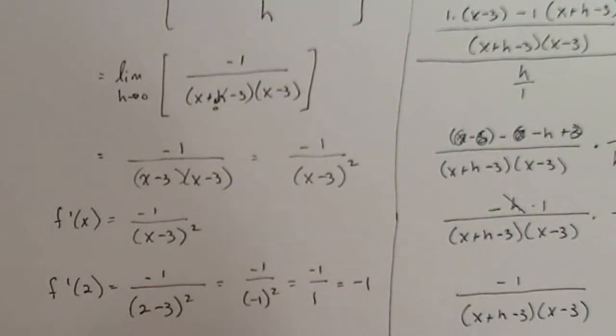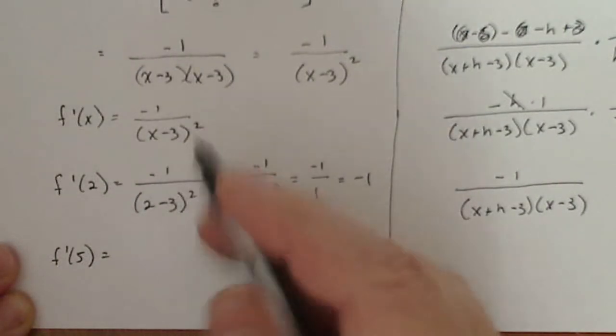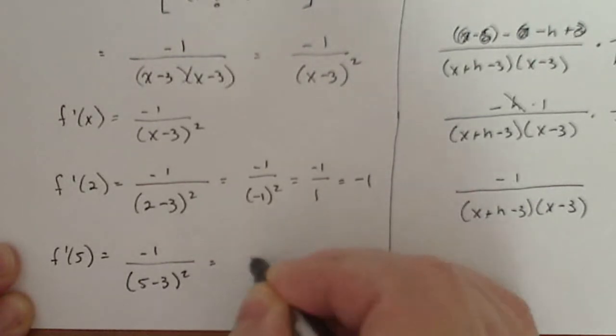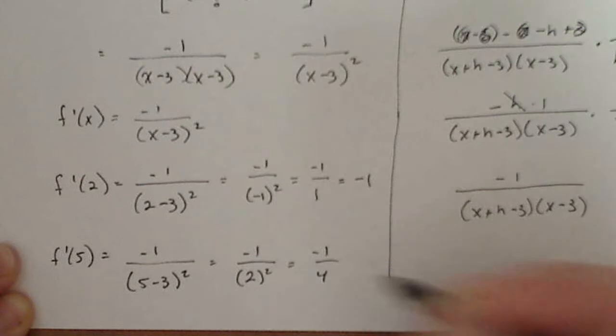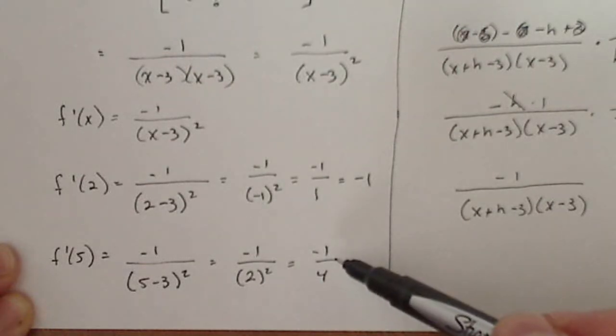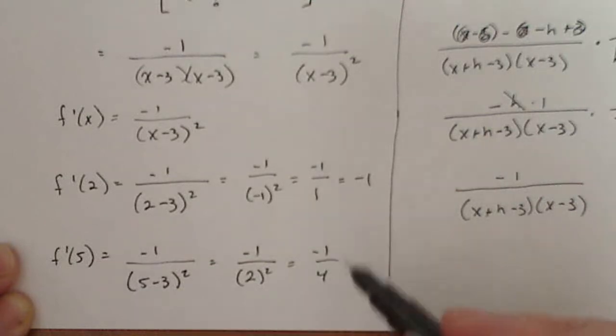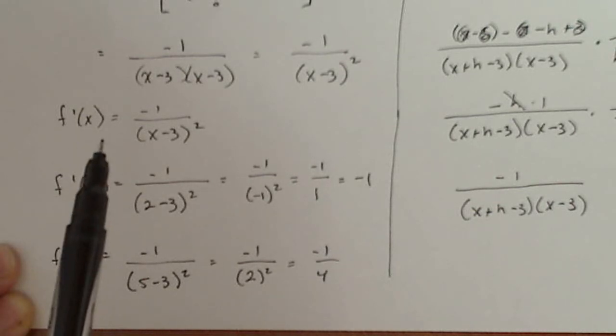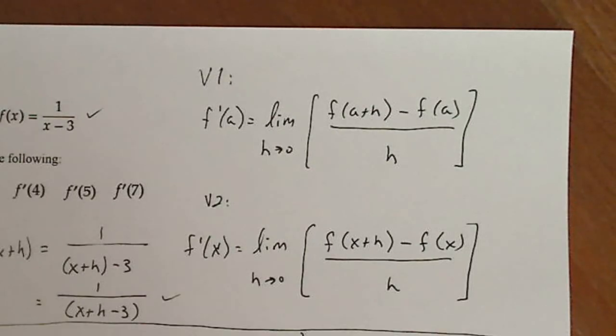All right, let's do one more f prime of five. So that means I'm going to take and put five in here. So minus one divided by five minus three squared equals minus one divided by two squared minus one over four. So the slope of the tangent line to the graph of f at x equal five is minus one quarter. I think students should be able to put in any number, whether it's four or seven or whatever, to be able to calculate the derivative at a point using the derivative function itself as opposed to repeated process of this guy here. Okay, thanks.